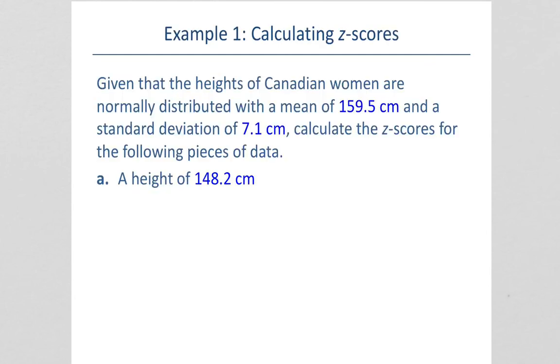Example one wants us to calculate z-scores. Given that the heights of Canadian women are normally distributed with a mean of 159.5 centimeters and a standard deviation of 1.7 centimeters, calculate the z-scores for the following pieces of data.